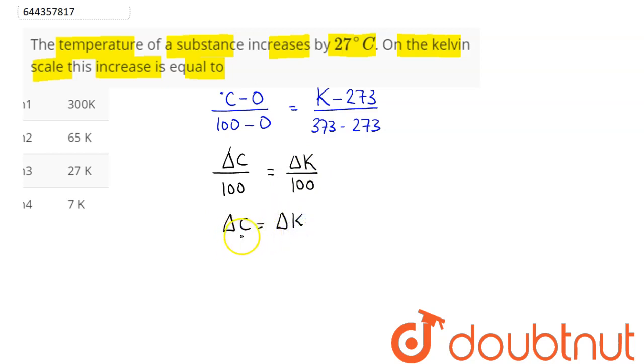That is, the temperature difference in degree Celsius is equal to temperature difference in Kelvin. Hence, temperature difference in degree Celsius is given as 27 degree Celsius which is equal to temperature difference in Kelvin scale.